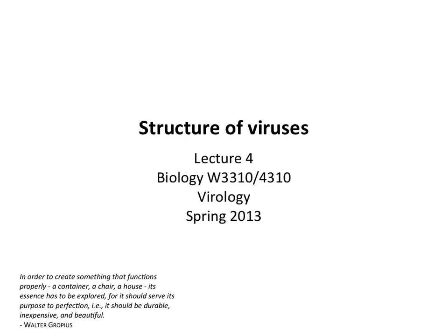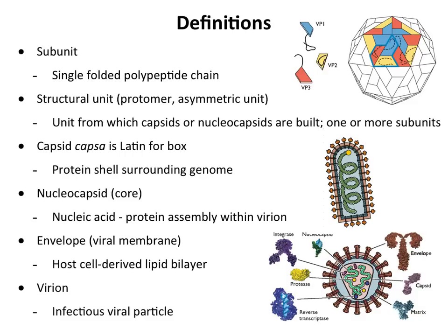Good afternoon everybody. Today we're going to talk about how to build a virus. Just like we did when we talked about genomes, we're going to try and simplify it — we could simplify all the virus genomes to seven different types. Today we're going to simplify all the different kinds of viruses to two, maybe three types at the most. Before we start, some definitions.